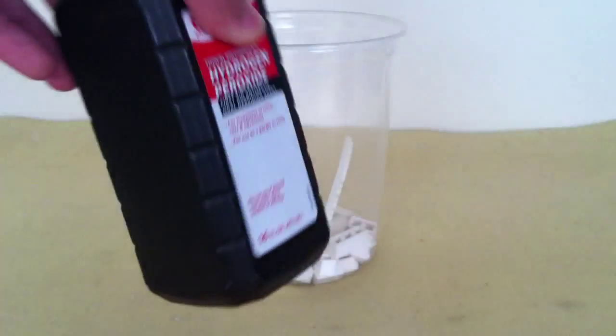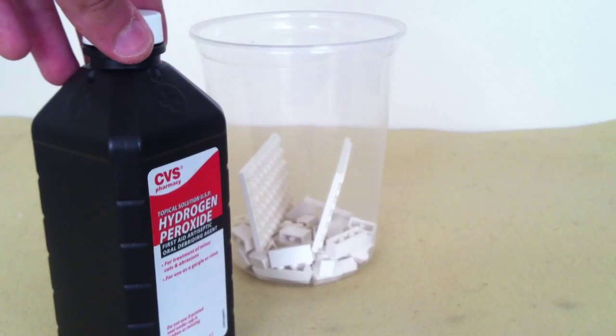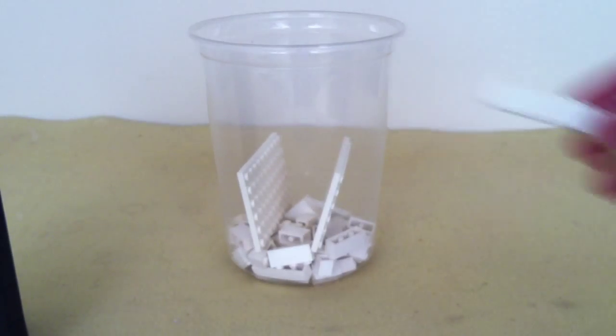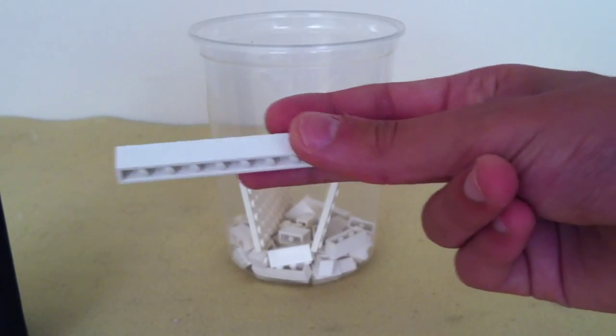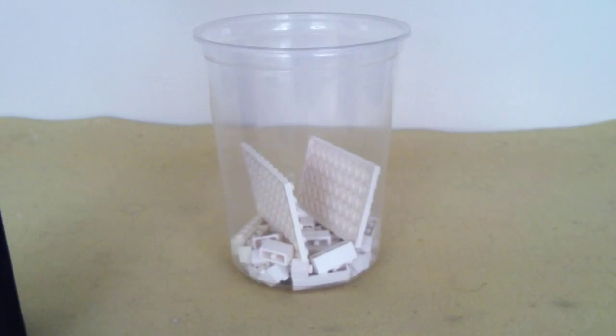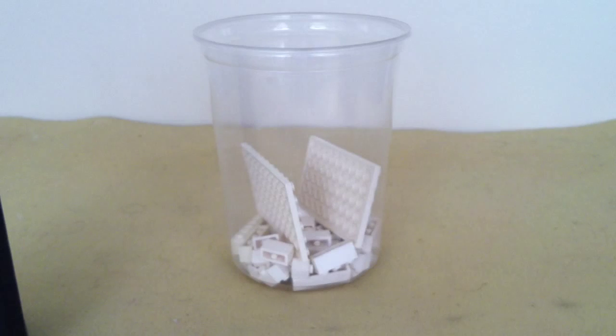And so basically what the hydrogen peroxide does is it reverses that, it reverses that chemical reaction and restores them back to this color. So the way to fix that, so you pour in the hydrogen peroxide and then you leave this out in the sun. So that's why I put these two like this so that as much light is going to be hitting all of the bricks.